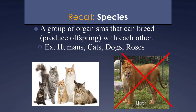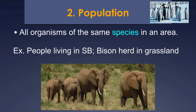That brings us to our next grouping: populations. A population is all organisms of the same species in an area — the same type of organism, all in the same area. For example, all La Colina students make up our school's population, all people in Santa Barbara, bison in a grassland, or lions in a savanna.